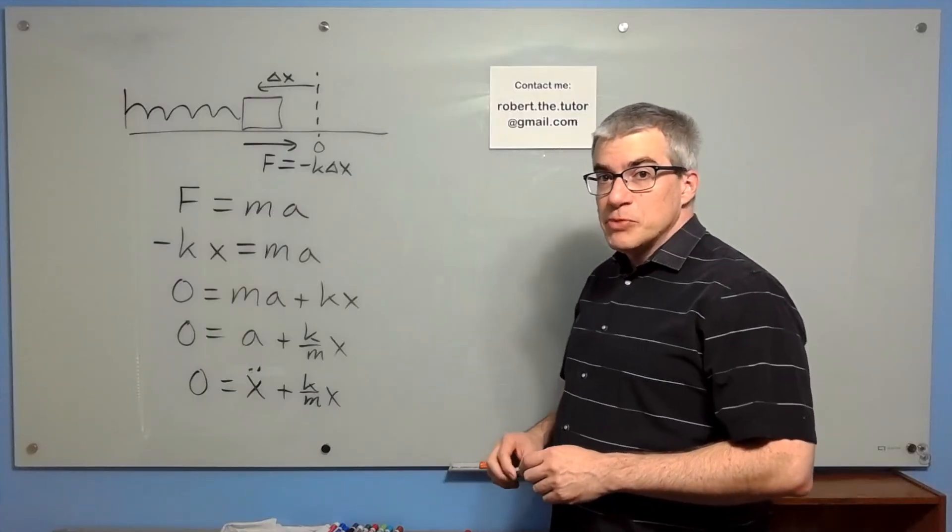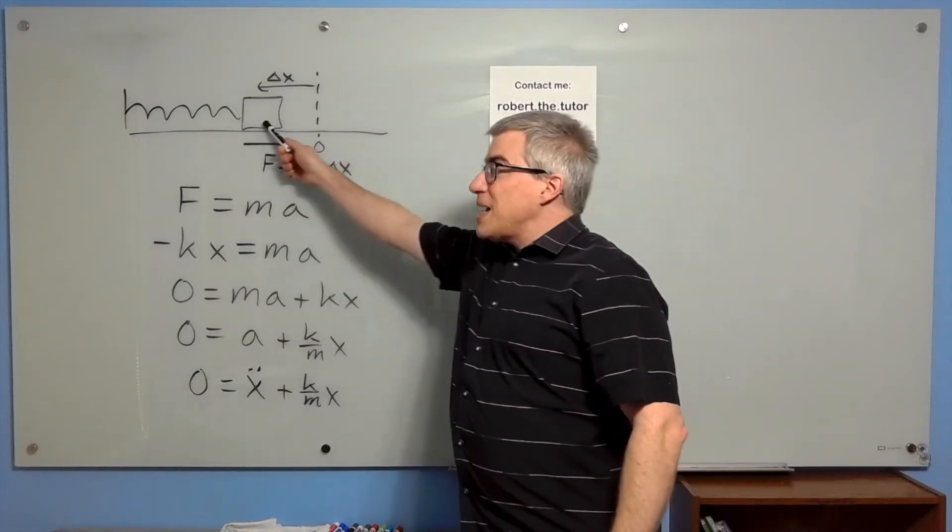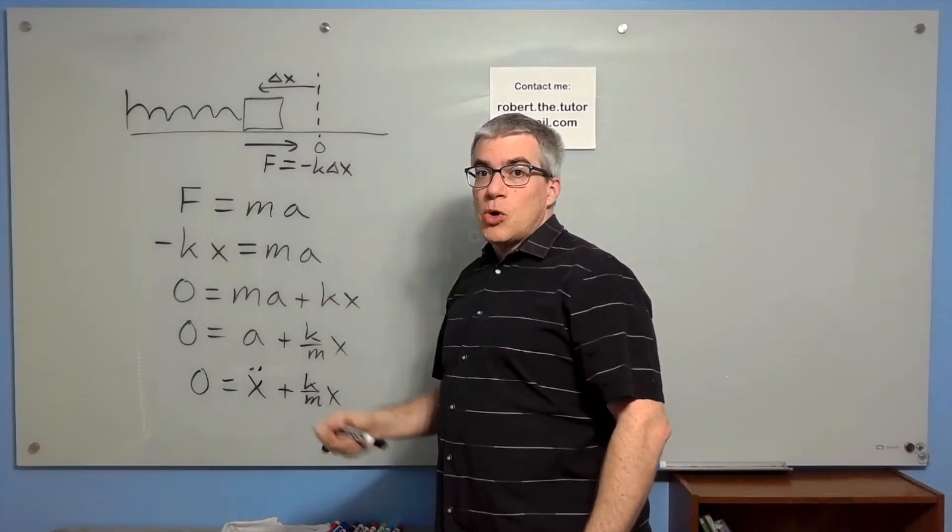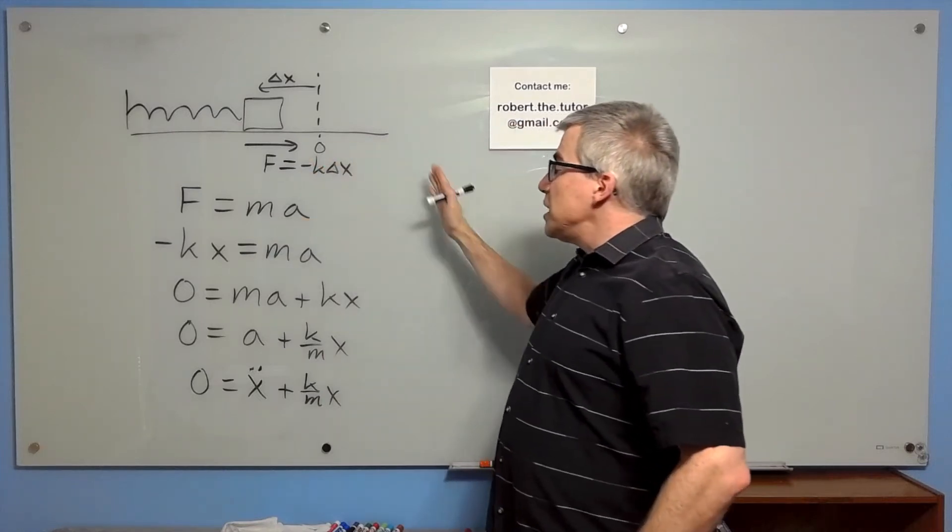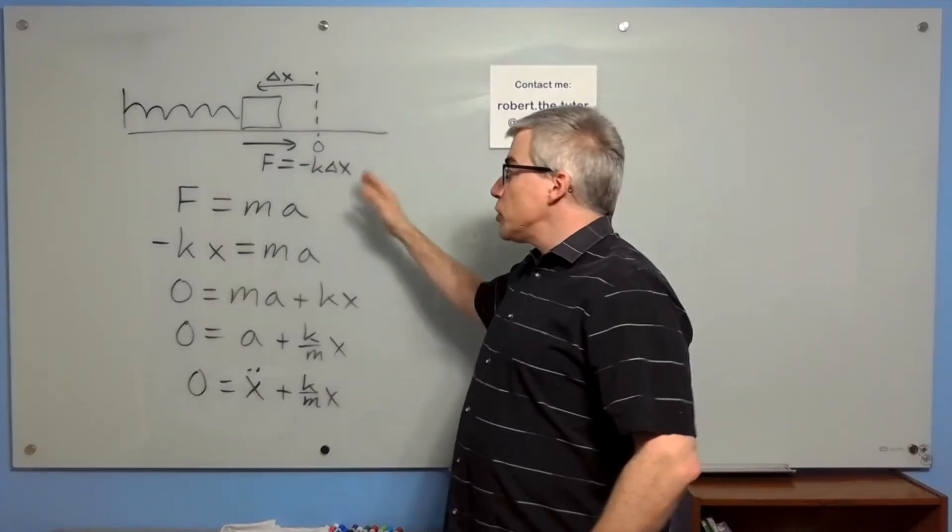The simplest example of a simple harmonic oscillator is a mass on a spring that's attached to a wall. No friction, nobody's shoving it regularly, and it has what we call a linear restoring force.